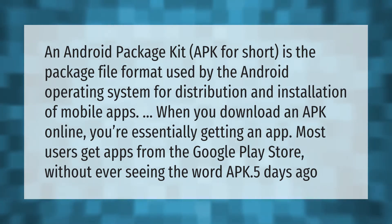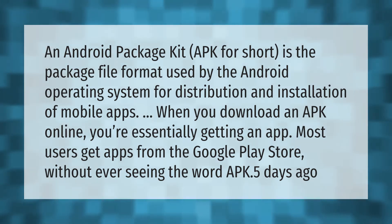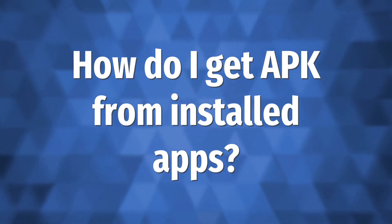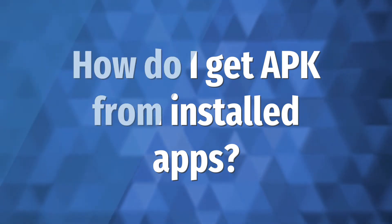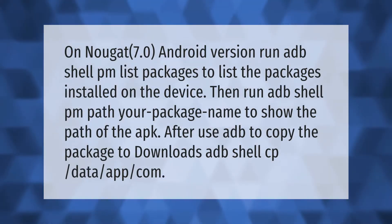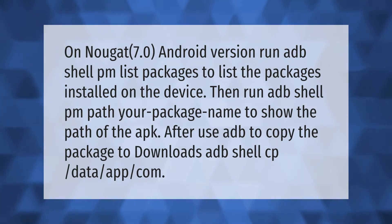On Android Nougat 7.0, run `adb shell pm list packages` to list the packages installed on the device. Then run `adb shell pm path your-package-name` to show the path of the APK.